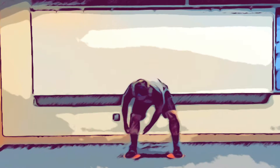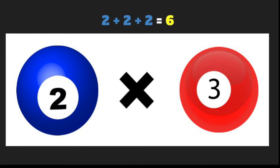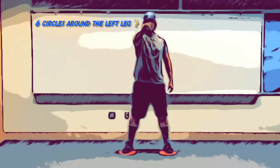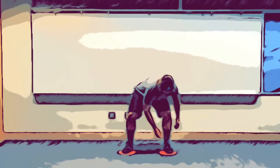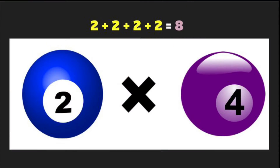1, 2, 3, 4. 2 times 3 equals... 1, 2, 3, 4, 5, 6. 2 times 4 equals...